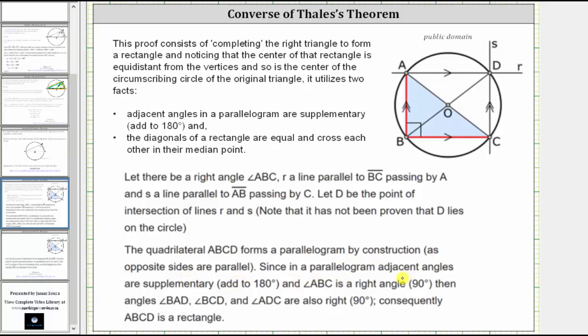Since in a parallelogram adjacent angles are supplementary, and angle ABC, again, this red angle, is a right angle. Then angles BAD, BCD, and ADC are also right angles. Consequently, quadrilateral ABCD is a rectangle.